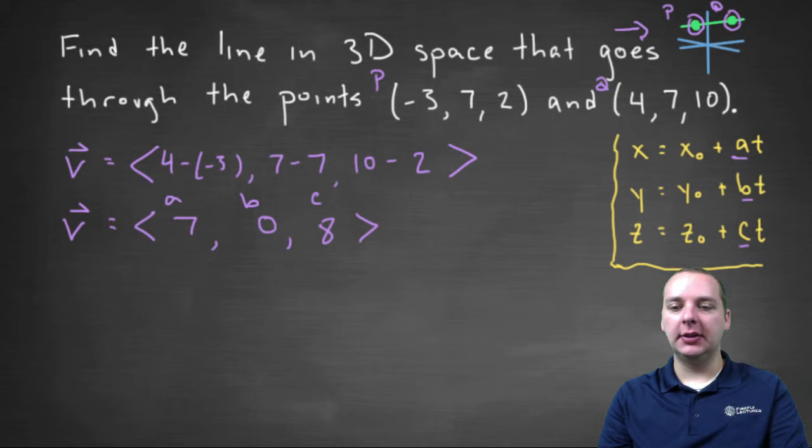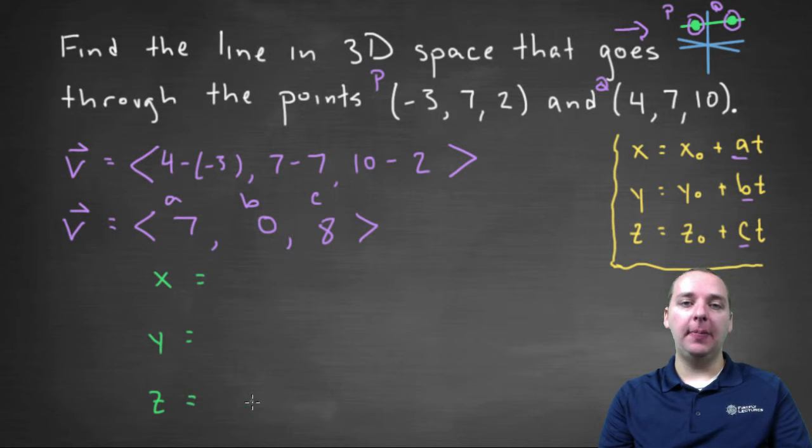So from here it's just a simple fill in the blank for the remainder of the problem. We'll have an equation for X, an equation for Y, and an equation for Z. We need our X-knot, Y-knot, Z-knot. And here's our A, B, and C.